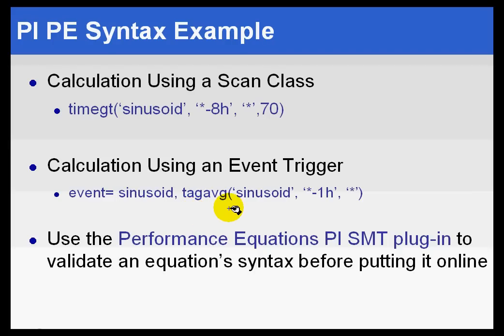Now, compare that to a calculation that has an event trigger. Here's a calculation in which we specify that the event trigger is the PI tag called sinusoid. And the calculation itself is this tag average function. This entire phrase that you see right here, this is what you would put in the extended descriptor for this calculation tag. And the syntax that we're using basically identifies that this is going to be the trigger, and this is the calculation itself.